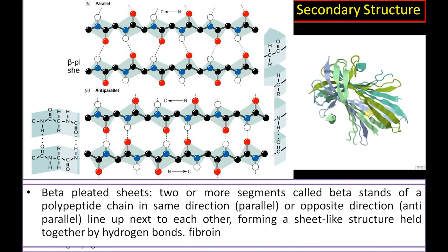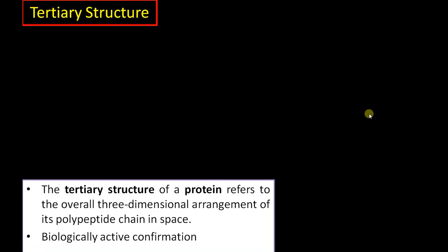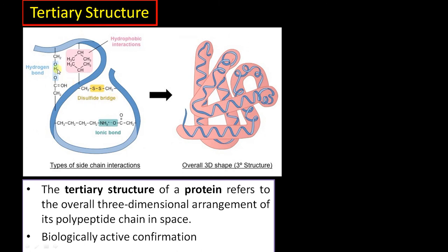Tertiary structure refers to the overall three-dimensional, biologically active conformation of a protein. It is formed by many types of bonds: hydrogen bonds, hydrophobic interactions, disulfide bonds between distant locations of a polypeptide chain, ionic bonds, and van der Waals forces. These all contribute to a biologically active conformation that includes active sites, catalytic sites, and allosteric or regulatory sites.